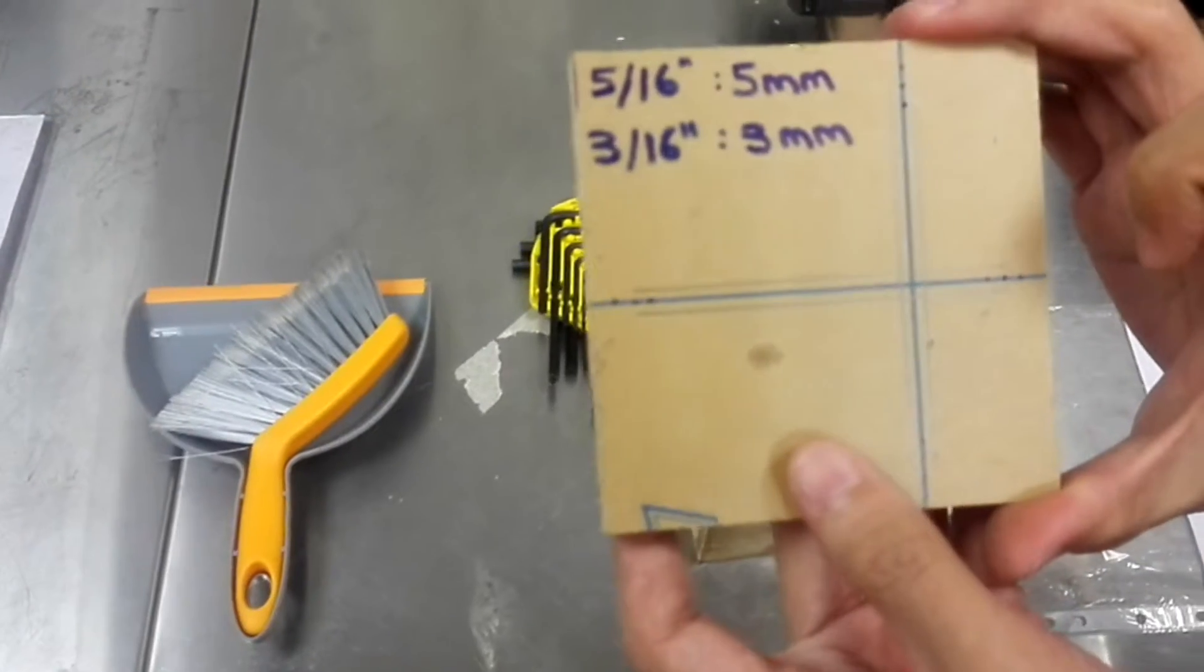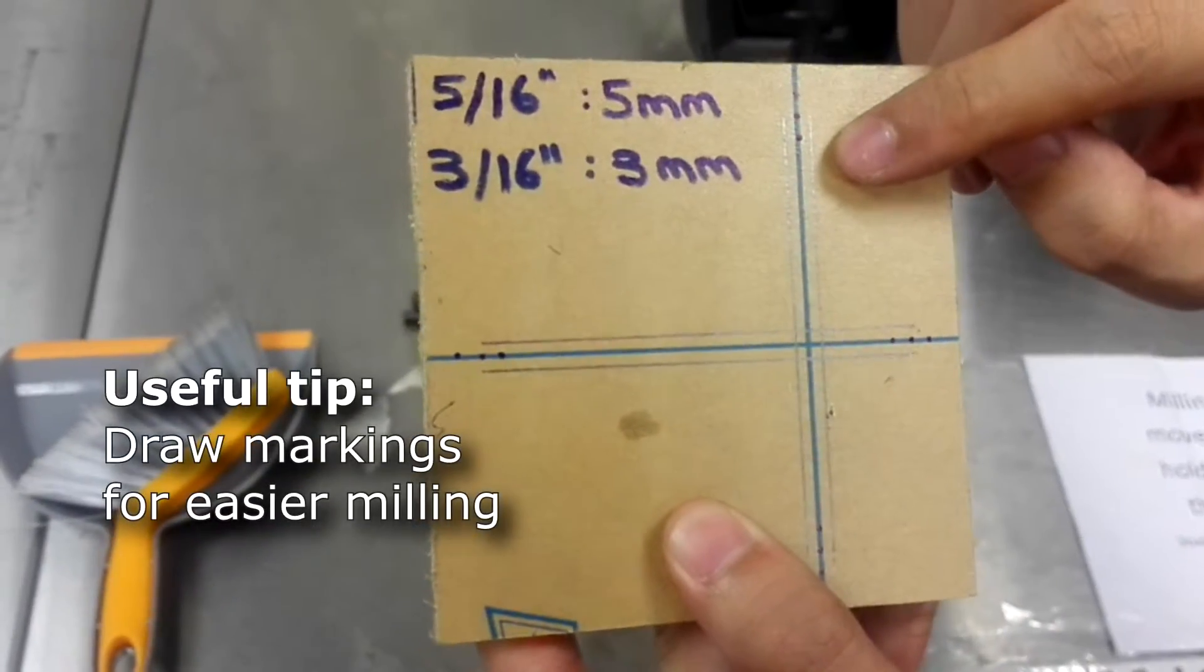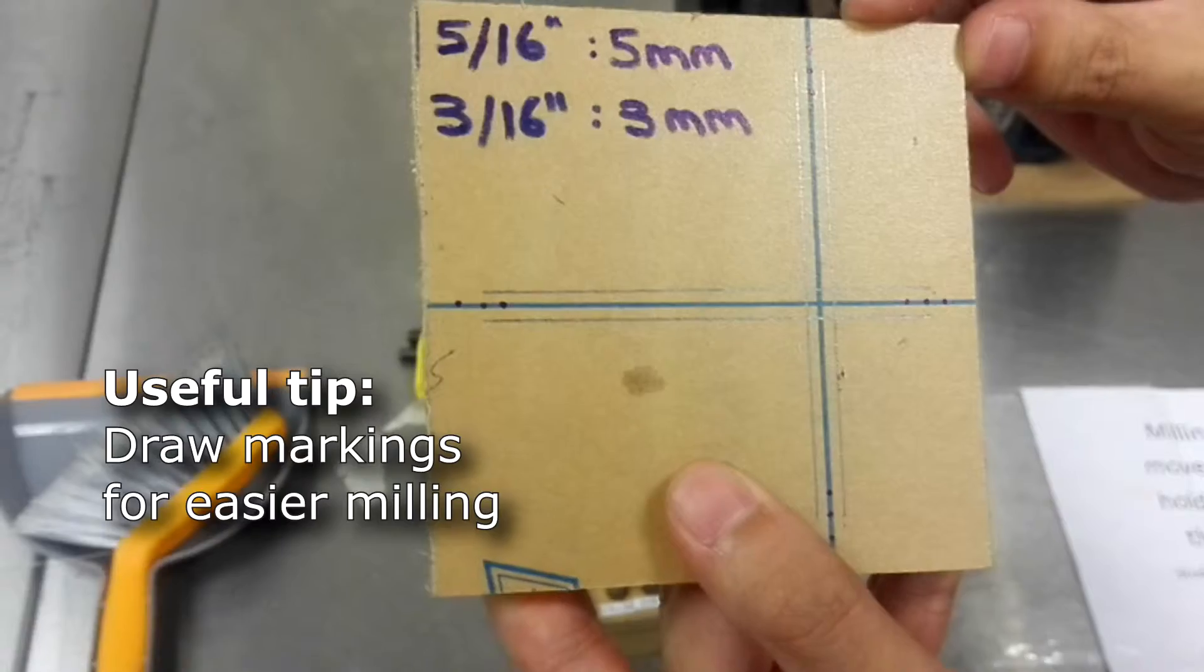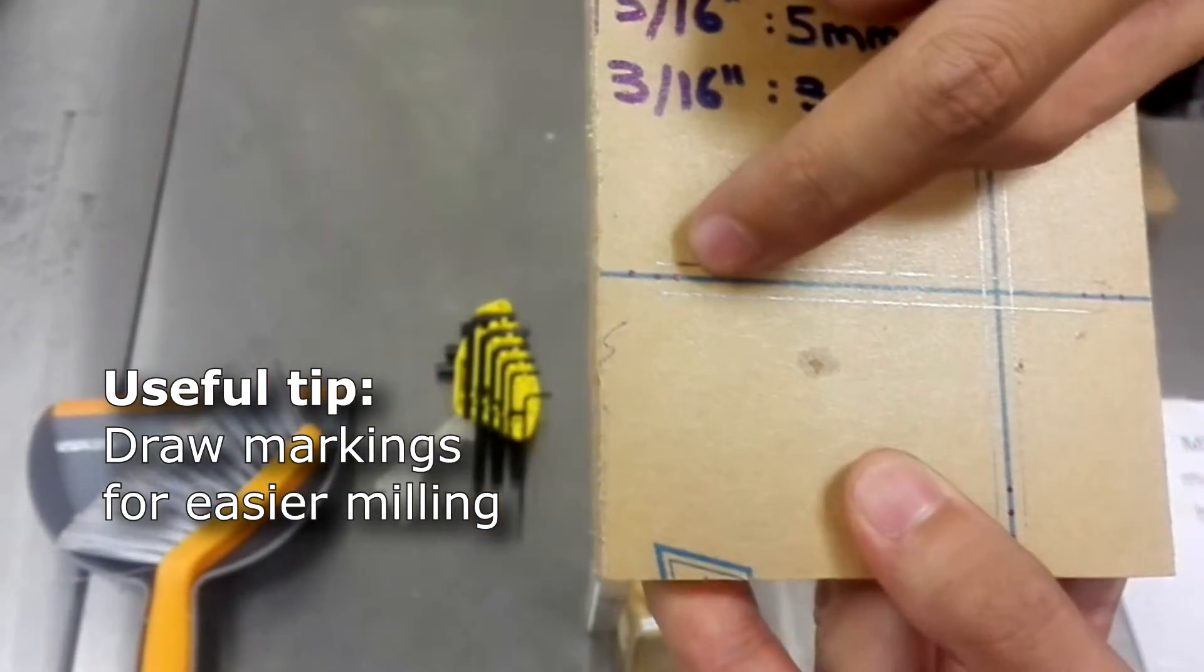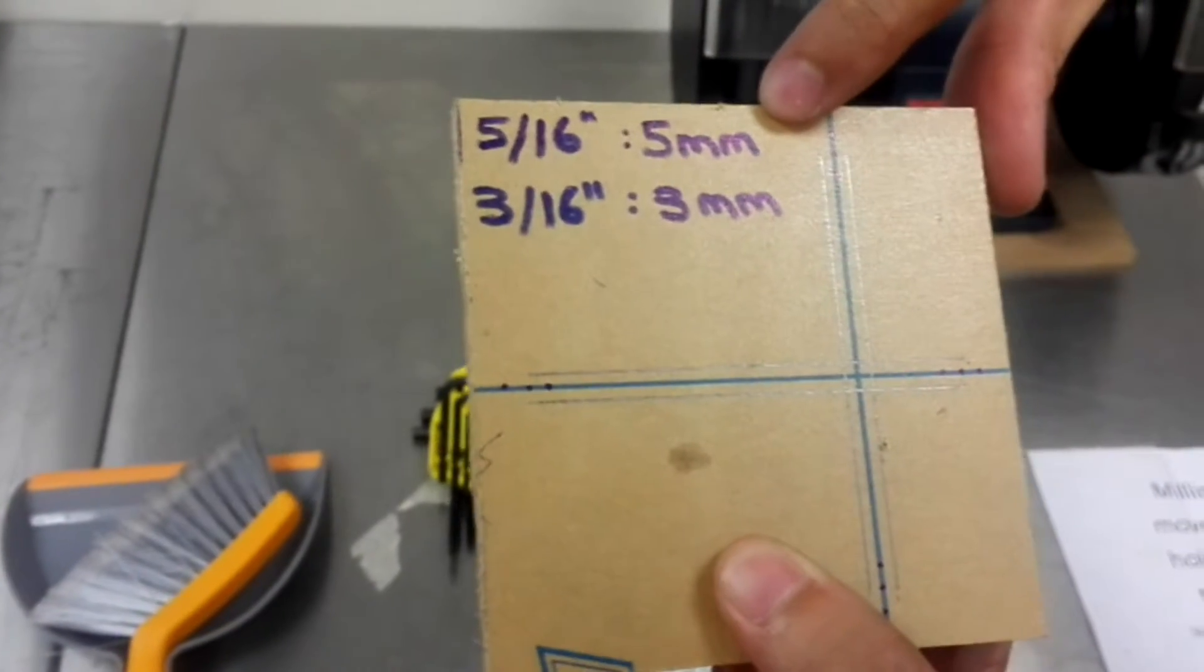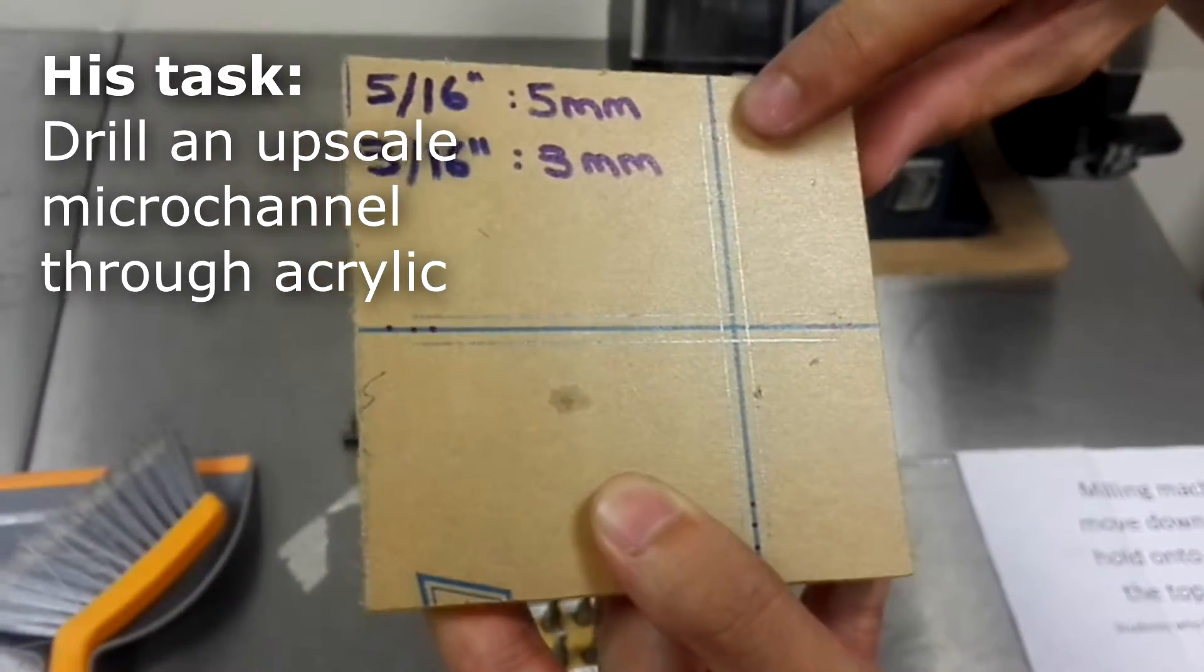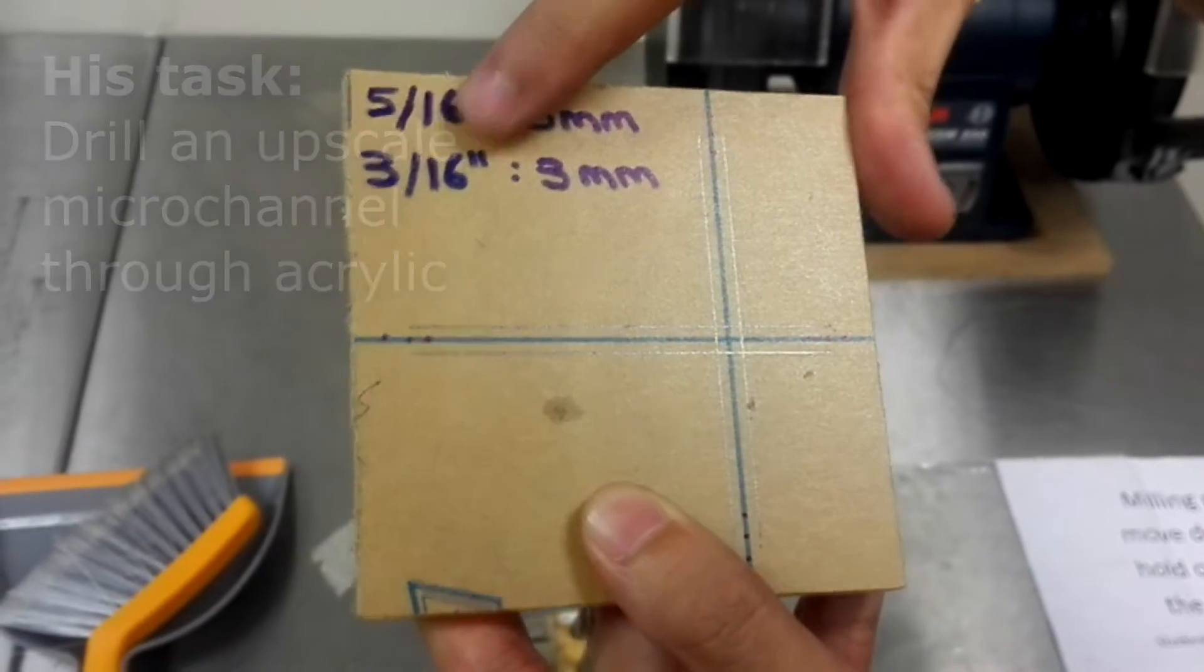Note, for the workpiece, before you start working on it, make sure to have markings as shown, so that you know what drill bits to use and how deep to go. The ones which are in blue marker are for my 5/16 drill bits which will be going at the depth of 5mm. The pencil markings are my channels which will be the 3/16 at 3mm.